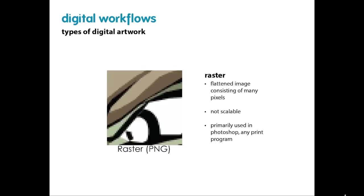By contrast, raster artwork is a flattened image consisting of pixels — each little square has its own fixed color value. As you scale that pixel grid up and down, the pixels change size but not their relationship to each other, so zooming in too much causes pixelization. Raster is used primarily for photos. In print programs, once you move from a digital environment to a printed format, vector artwork gets converted to raster — so be careful with low-resolution images.